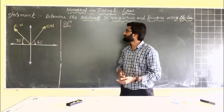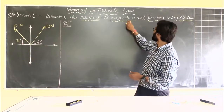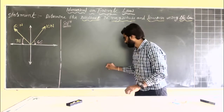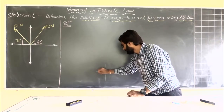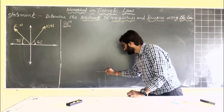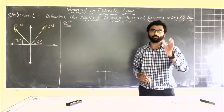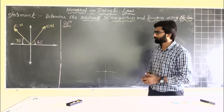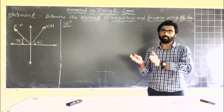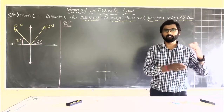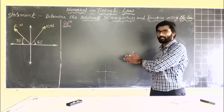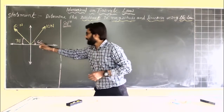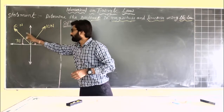To find out the resultant in its magnitude and direction, we have to start with an imaginary origin — we consider a particular point as an origin. From that point we apply the logic of triangle law that we have learned. So according to triangle law, we start with any one of the two forces.